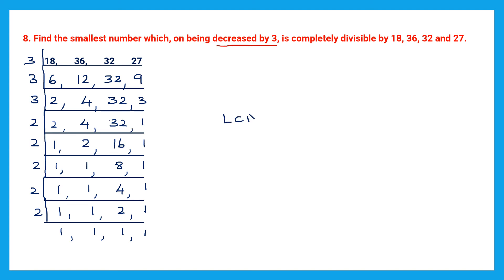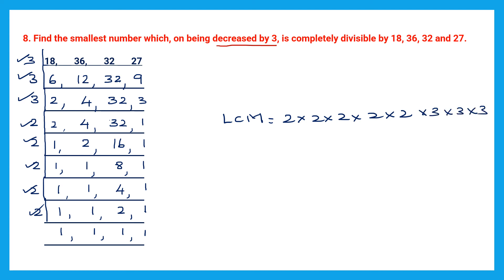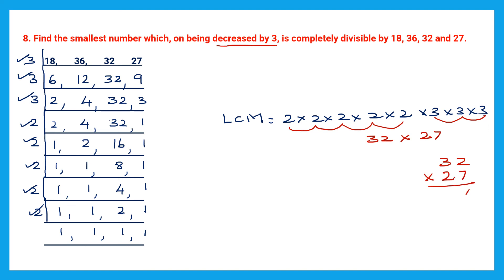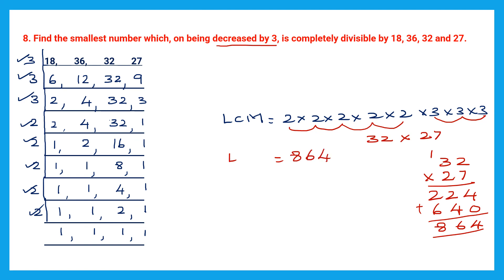Now let's find the LCM. Writing all the 2s: 1, 2, 3, 4, 5 twos. And the 3s: 1, 2, 3 threes. Multiplying all the 2s: 2 × 2 = 4, 4 × 2 = 8, 8 × 2 = 16, 16 × 2 = 32. Then 3 × 3 = 9. Now 32 × 27: 7 × 2 = 14 carry 1, 7 × 3 = 21 + 1 = 22. Then 2 × 2 = 4, 2 × 3 = 6. Adding: 4, 2 + 4 = 6, 2 + 6 = 8. So the LCM is 864.